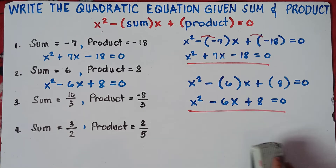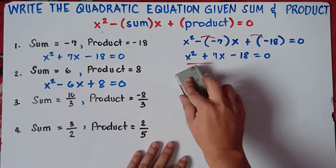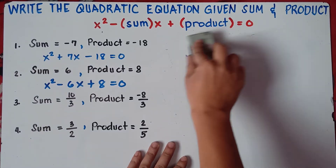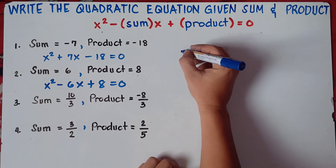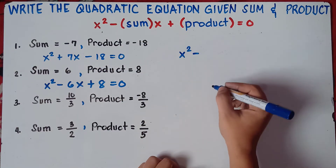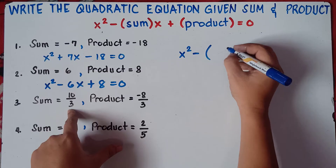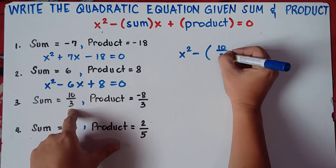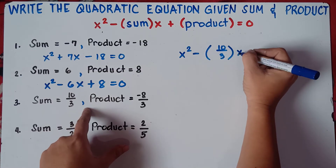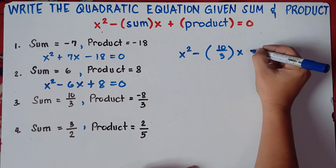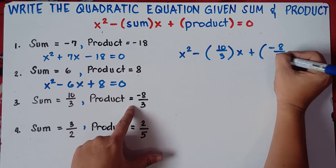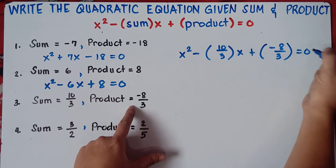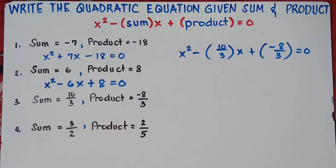That's the quadratic equation for numbers 1 and 2. Let's try number 3. Now this will be quite tricky since the given sum and product are fractions. So let me explain this one. Copy the equation: x squared minus the sum is 10 over 3, times x, plus the product is negative 8 over 3, equals 0.